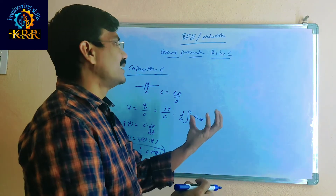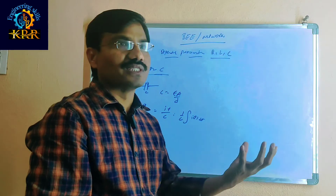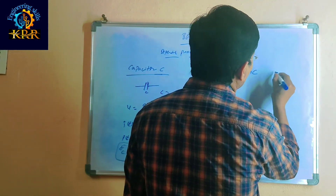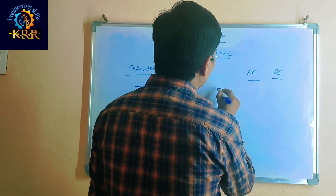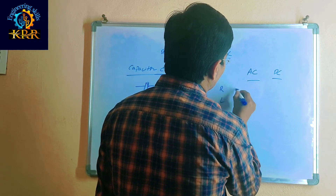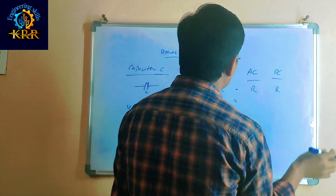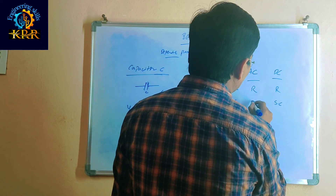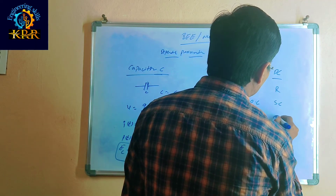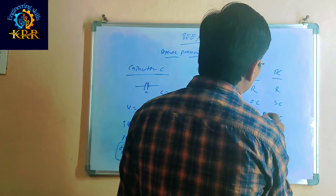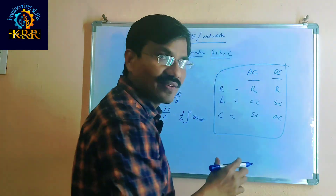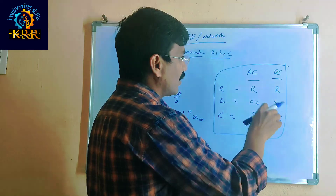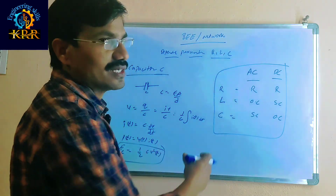Before going to the current division rule and voltage division rule, these are the basics. If it is AC or DC supply: for resistance, there is no change — it behaves the same in both AC and DC. For inductance in DC, it is short-circuited; in AC, it is open-circuited. For capacitance in DC, it is open-circuited; in AC, it is short-circuited. This is very important for circuit solving — knowing which supply is applied and what happens in the inductor and capacitor.